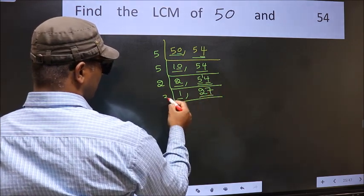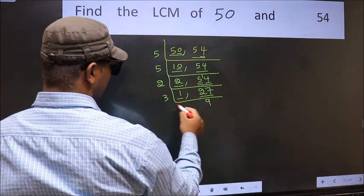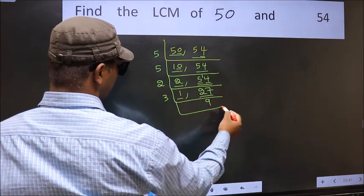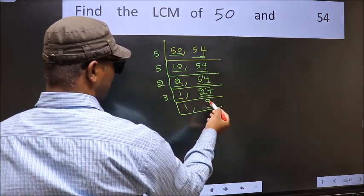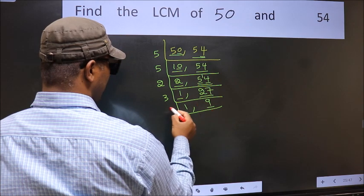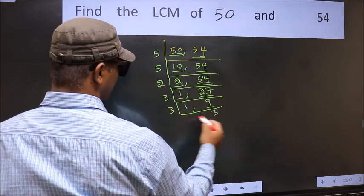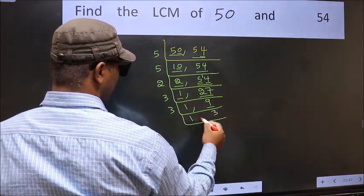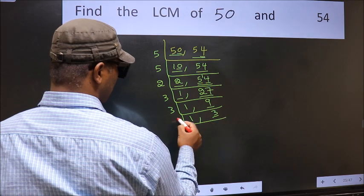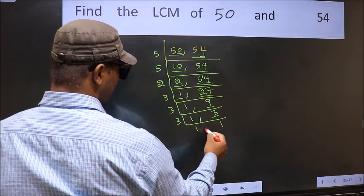27 — 3 times 9 is 27. Now we have 9: 3 times 3 is 9. Now we have 3. 3 is a prime number, so 3 times 1 is 3.